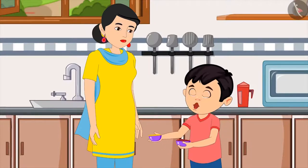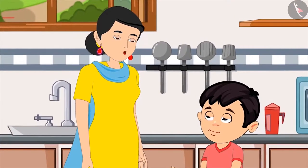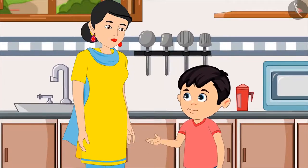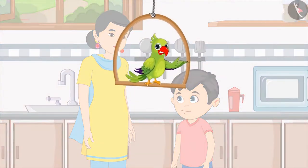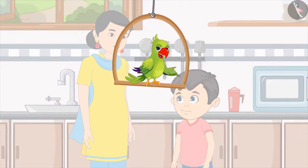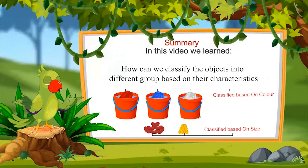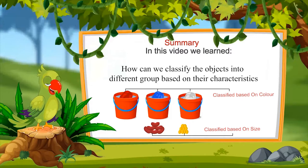'Here you go mom, dal and rajma are separated.' 'Very good Chotu, thank you! Now let me quickly make dal and rice for you.' 'Okay mom, till then let me go and call everybody else to eat.' So children, did you enjoy seeing the examples of classification? In this video we have learned how we can classify objects based on their characteristics like color and shape, and create different groups of them. I hope you have enjoyed and understood this topic properly. Bye friends!